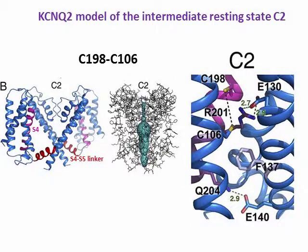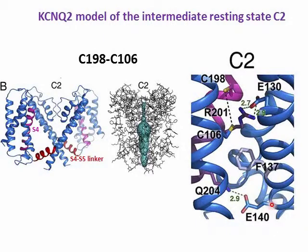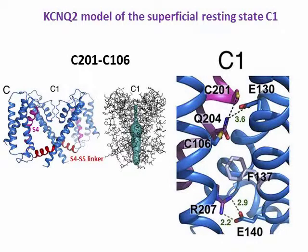The C2 resting state model emerges from cadmium bridges formed between cysteine-198 in S4 and cysteine-106 in S1. In this closed state, the S4 gating charge arginine-201 is sufficiently close to glutamate-130 in S2 to form salt bridges, and glutamine-204 in S4 is at hydrogen bonding distance from glutamate-140 in S2. The C1 resting state model emerges from cadmium bridges formed between cysteine-201 in S4 and cysteine-106 in S1. In this closed state, the third gating charge arginine-207 in S4 is sufficiently close to glutamate-140 to form a salt bridge.